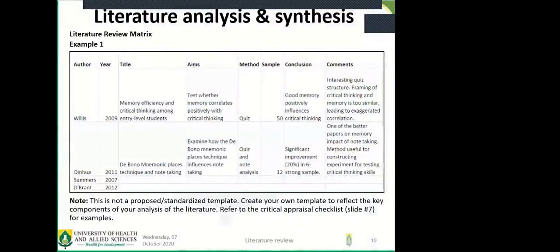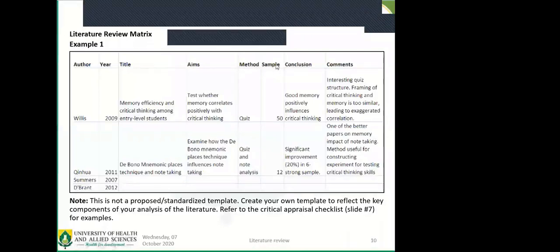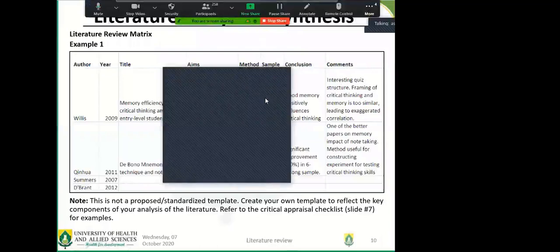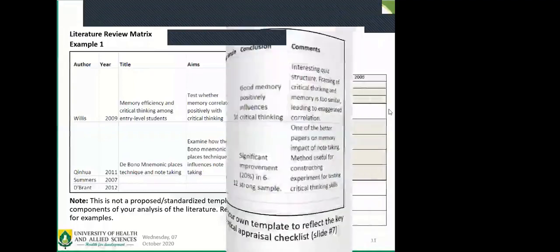People use a literature analysis and synthesis table — for every article you are reading you pick certain elements: the author, year, title, aims of the paper, method used, sample size, conclusions drawn, and your own comments or impressions about the paper after reading it. All these things help you have a structure for your literature review. The parameters you use to evaluate every single paper are flexible — you are welcome to use whichever ones suit your research.